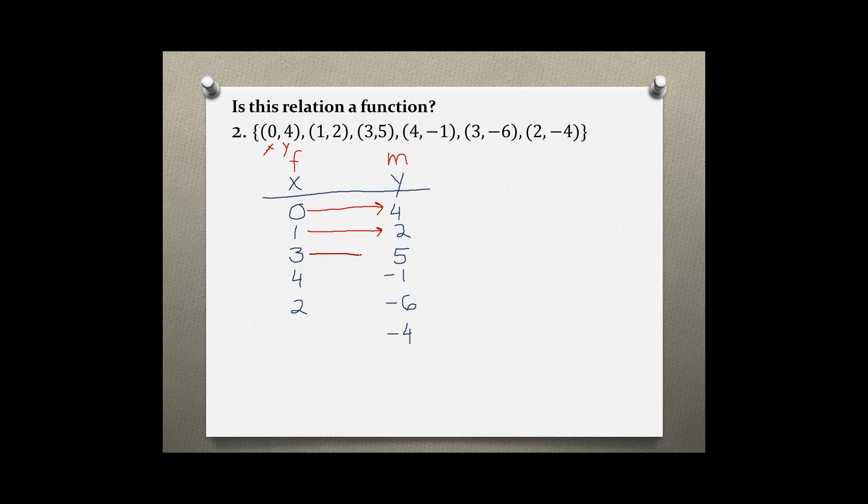3 who is dating 5, 4 who is dating negative 1, and then female 3 again who is dating negative 6, and 2 who is dating negative 4.